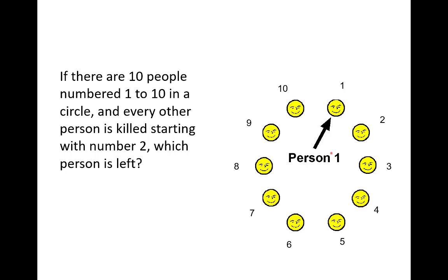So let's play this game a little bit, and what we really want to do is figure out, like Josephus, where do you want to sit should you find yourself in a similar situation. If there are ten people numbered one to ten in a circle, and every other person is killed starting with number two, which person is left?